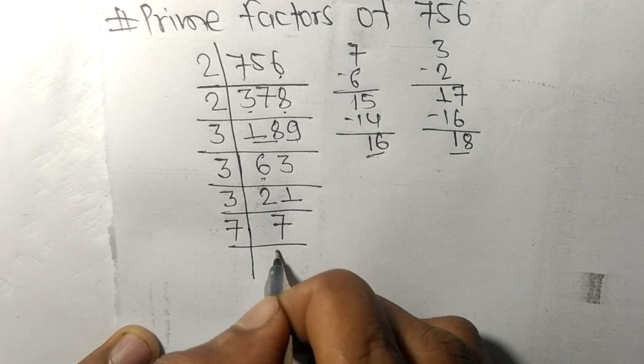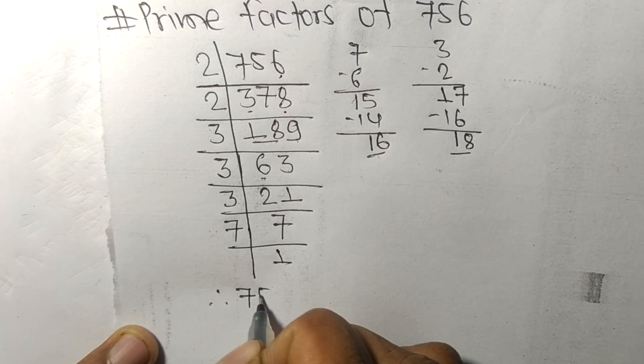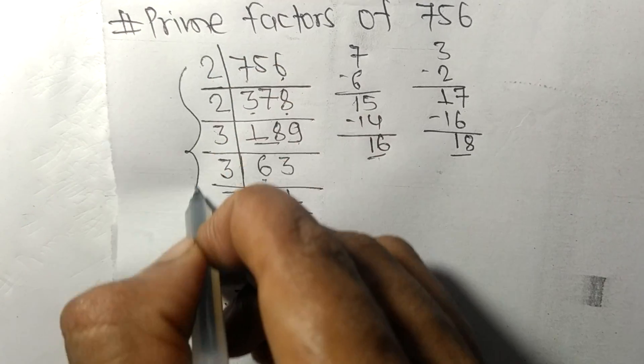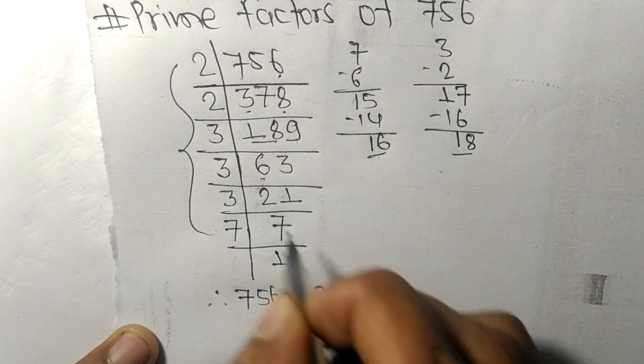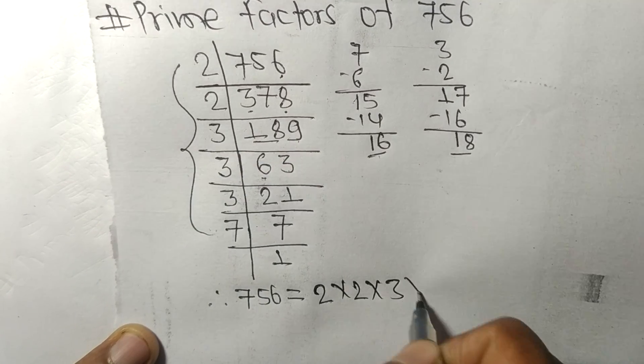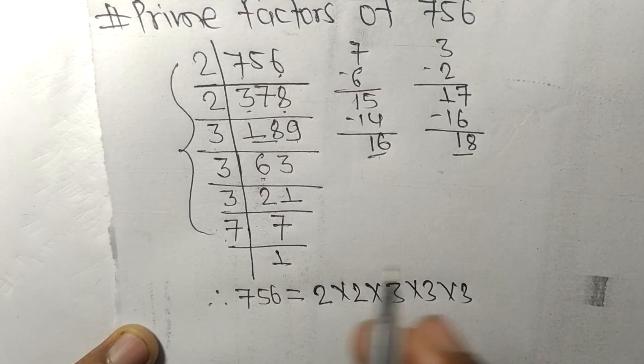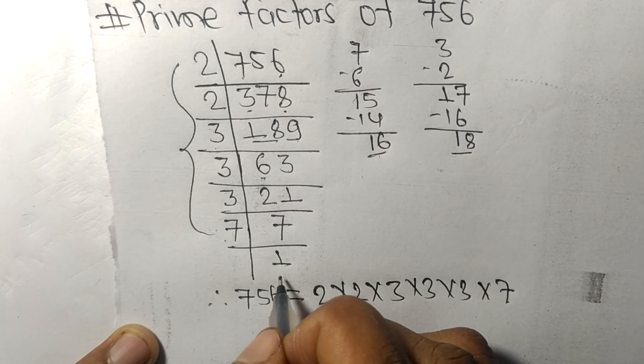Therefore 756 is equal to, from this side it is 2 times 2. From here it is 1, 2, 3 times 3 times 3. And from here it is 7 and from this side it is 1.